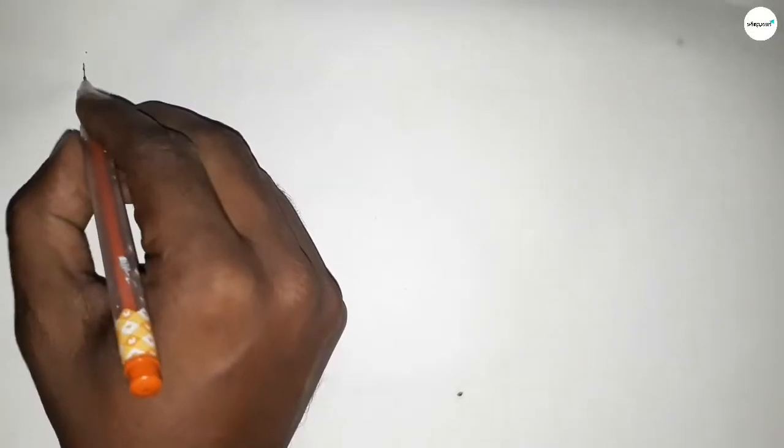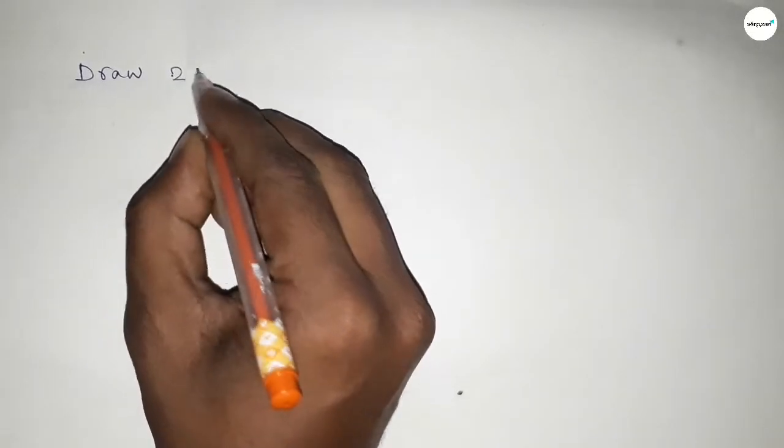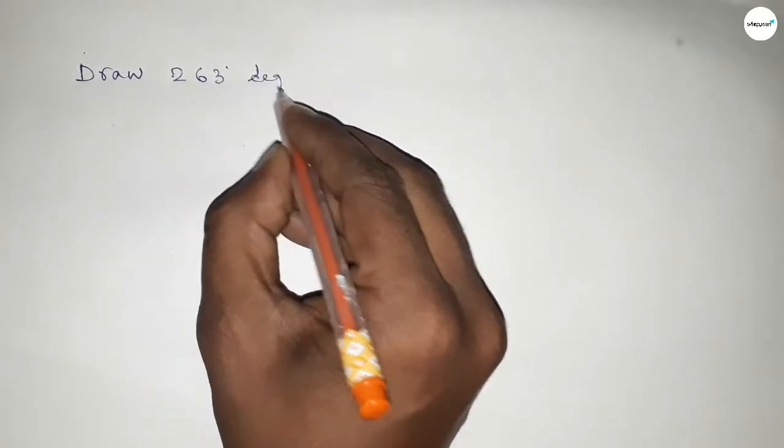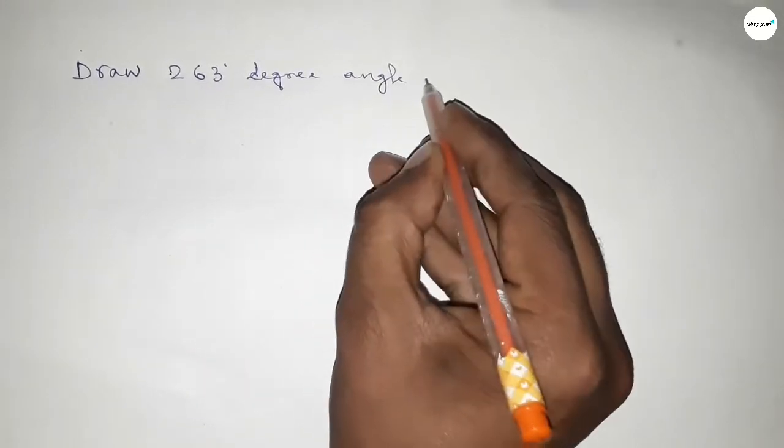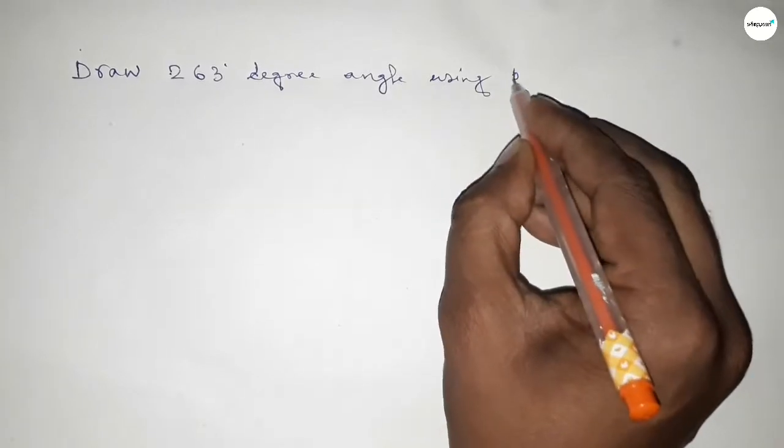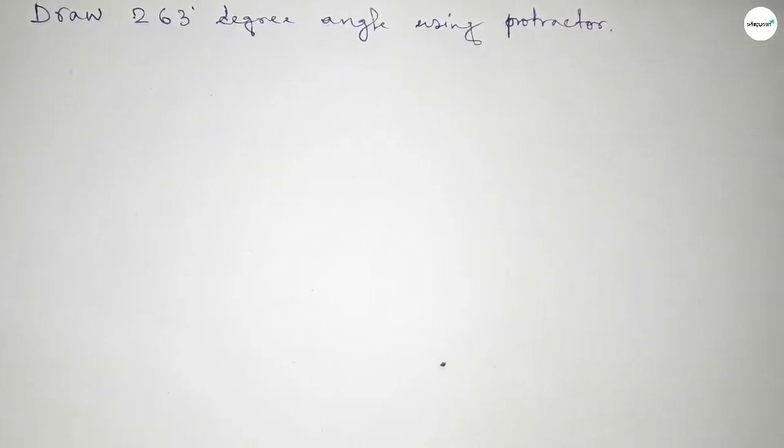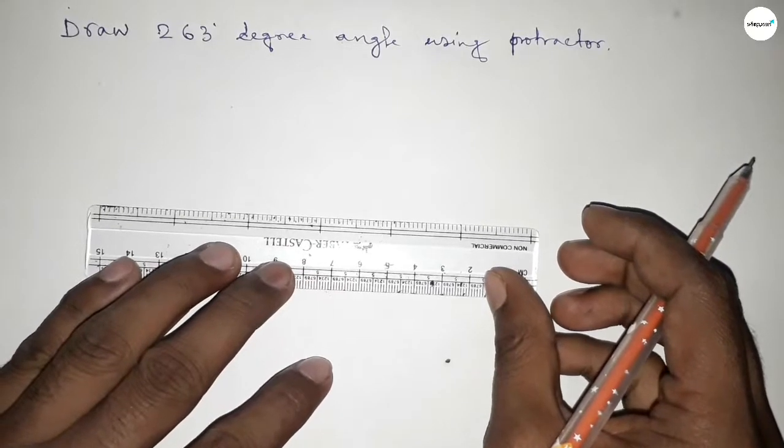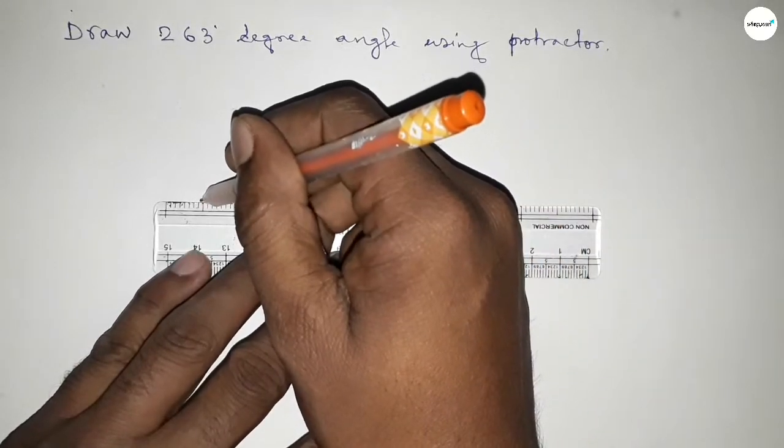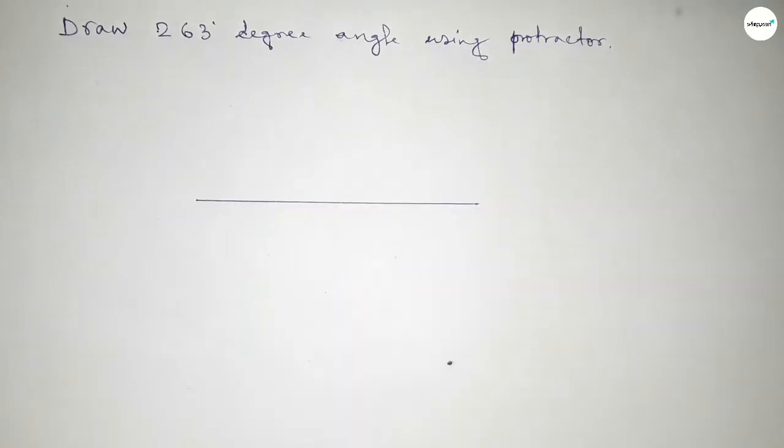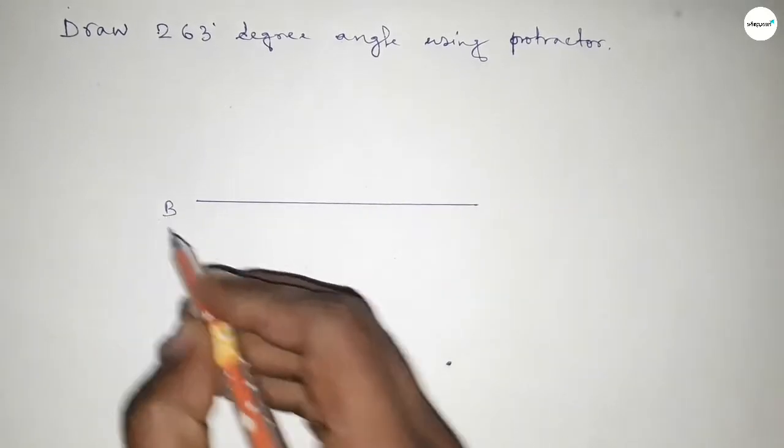Hi everyone, welcome to SI Share Classes. Today in this video we have to draw a 263-degree angle by using protractor. So let's start the video. Now first of all, we have to draw here a straight line, next taking this end B point and here A point.